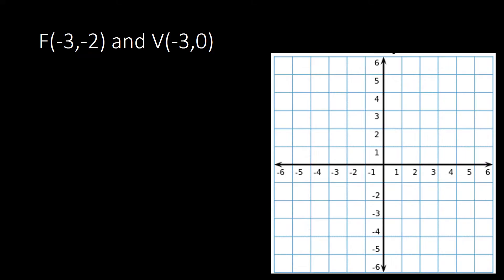Moving to the next example: focus is at (−3, −2) and vertex is at (−3, 0). We plot these on the Cartesian plane. The intersection of x = −3 and y = −2 gives us our focus at (−3, −2).